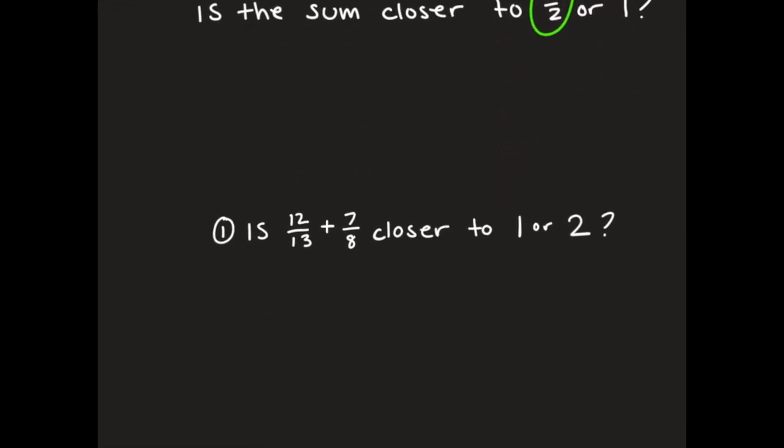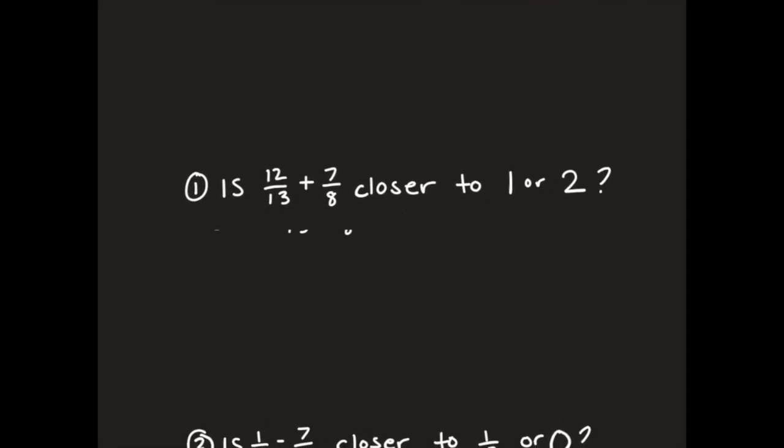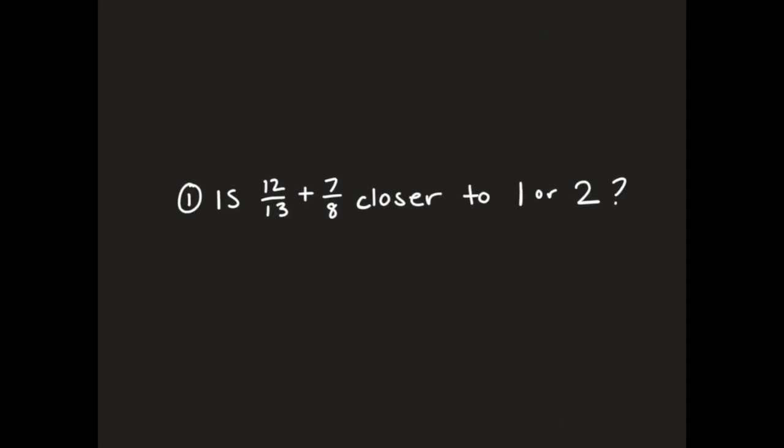All right, I have just two more problems to practice here, answering some questions. And again, remember we're using estimation to solve these problems. Is 12/13 plus 7/8 closer to one or two? And so when I look at those fractions here, 12/13, that is really close. I am almost to one. If I have one more thirteenth, just one plus one thirteenth, I am almost at one whole so I'm going to say that that's about one.